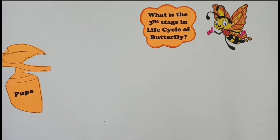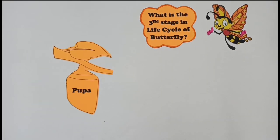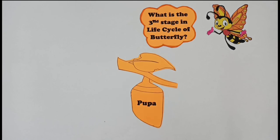What is the third stage in the life cycle of a butterfly? Very good children, it's pupa.